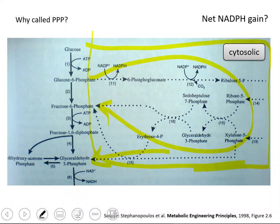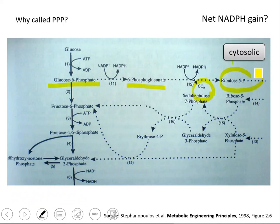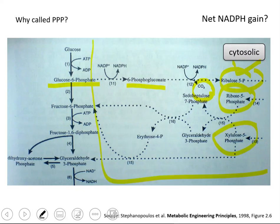Why is it called the pentose phosphate pathway? Pentose means 5 — penta means 5. Our glucose and glucose-6-phosphate had 6 carbons. The reaction with 6-phosphogluconate releases a carbon dioxide from the substrate molecule and makes ribulose-5-phosphate — a molecule with 5 carbons. Ribose-5-phosphate, ribulose-5-phosphate, and xylose-5-phosphate all have 5 carbons. Because of the formation of these 5-carbon structures, this pathway is called the pentose phosphate pathway, and all those molecules have phosphates.